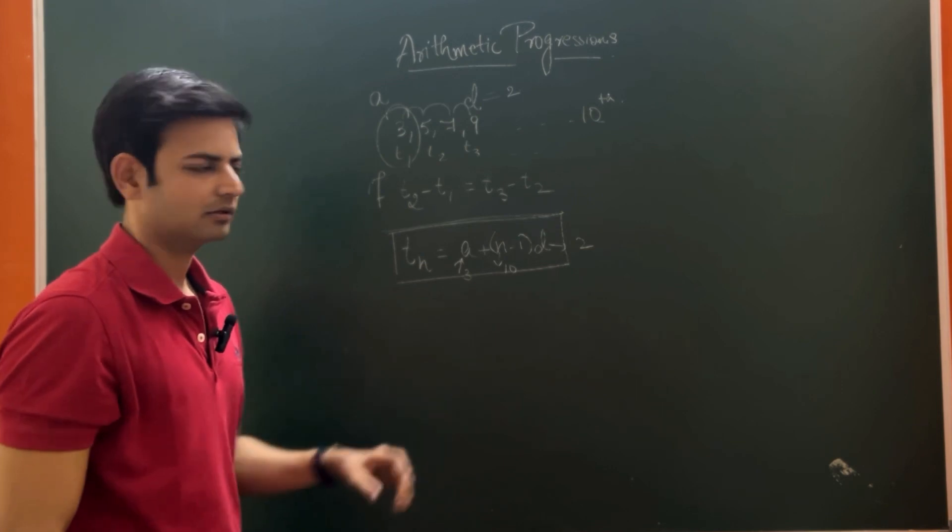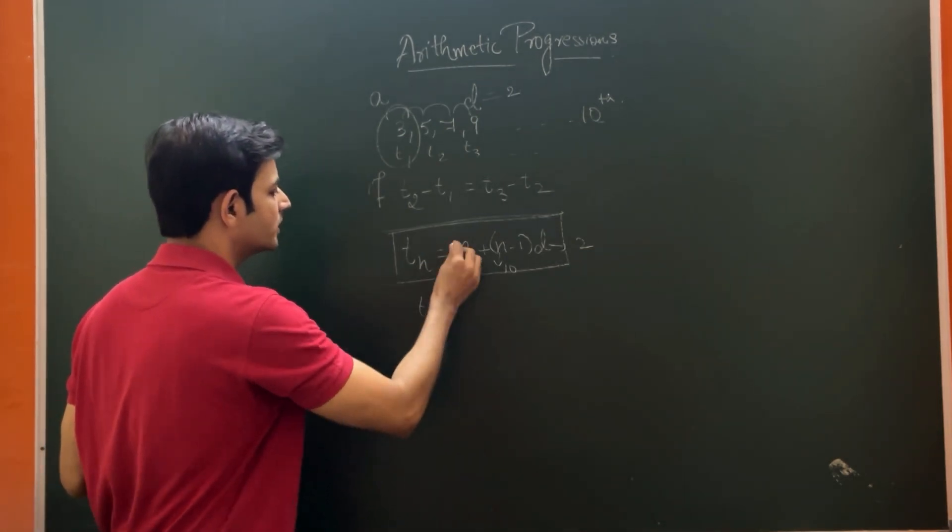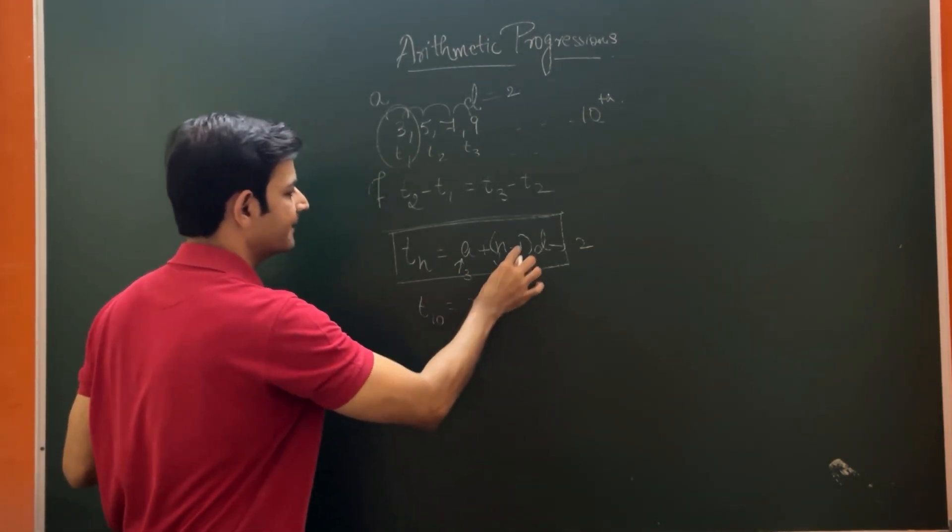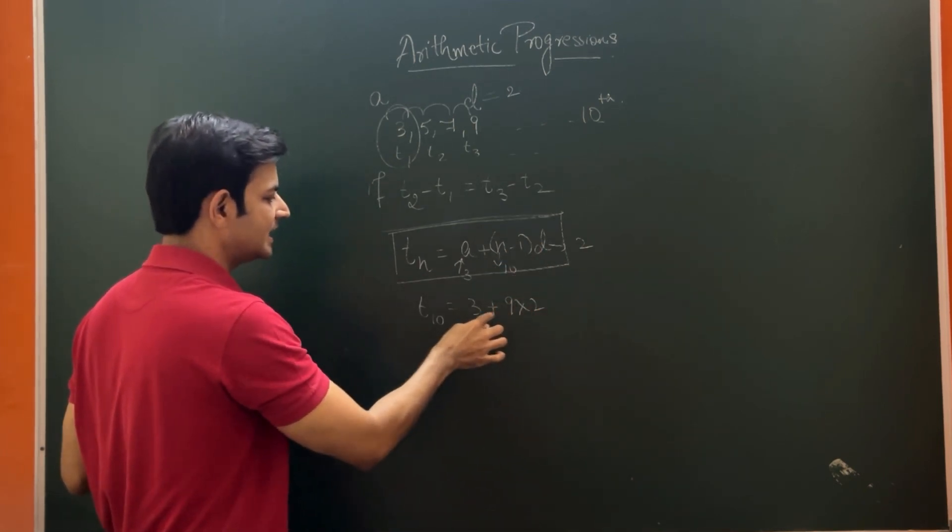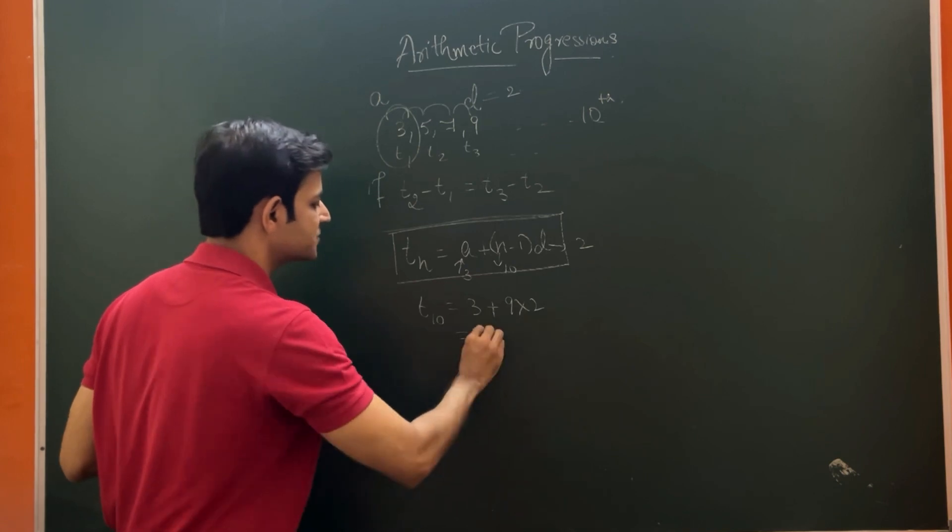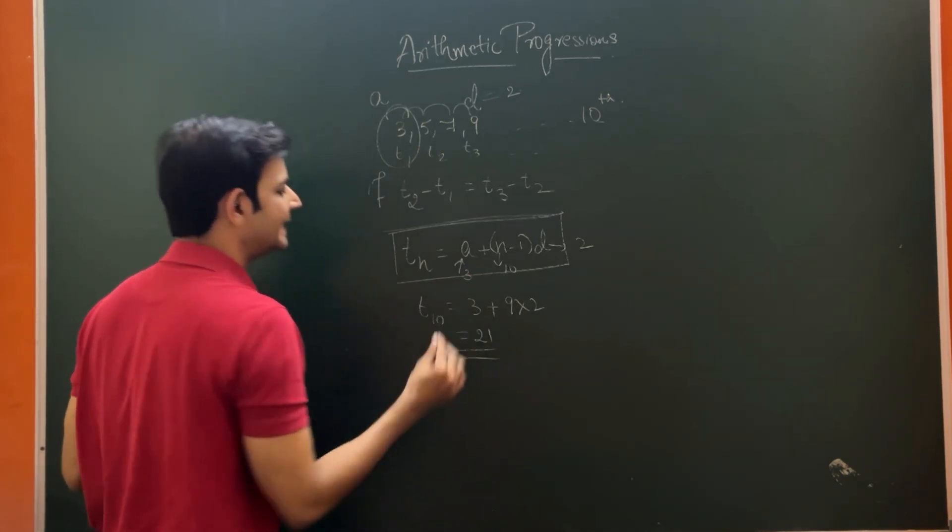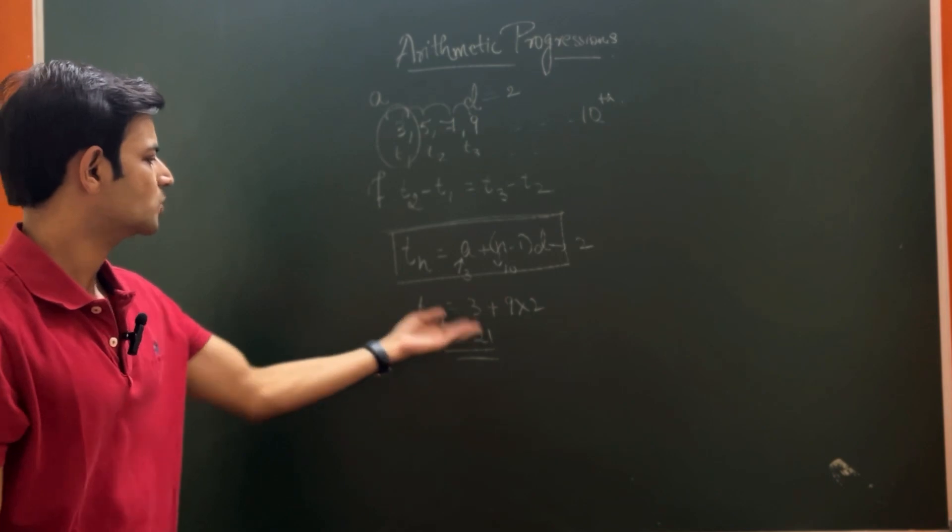We just have to apply here. T10 is equal to 3 plus 10 minus 1 is 9 into 2. So 9 times 2 is 18, 18 plus 3 is 21. Here my 10th term is 21.